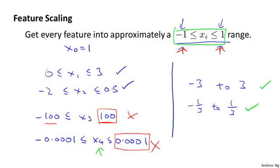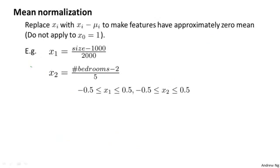In addition to dividing by the maximum value, when performing feature scaling, sometimes people will also do what's called mean normalization. What I mean by that is that you might take a feature xi and replace it with xi minus mu i to make your features have approximately zero mean. And obviously we won't apply this to the feature x0 because the feature x0 is always equal to 1, so it cannot have an average value of 0.